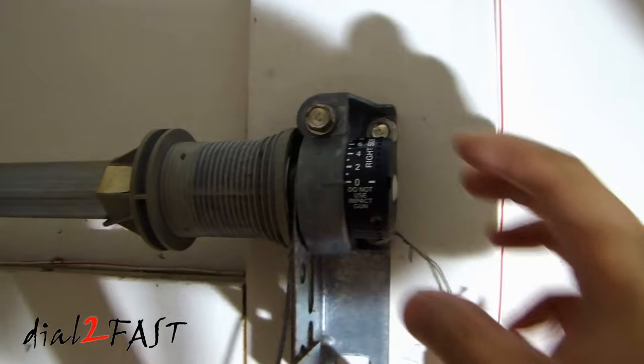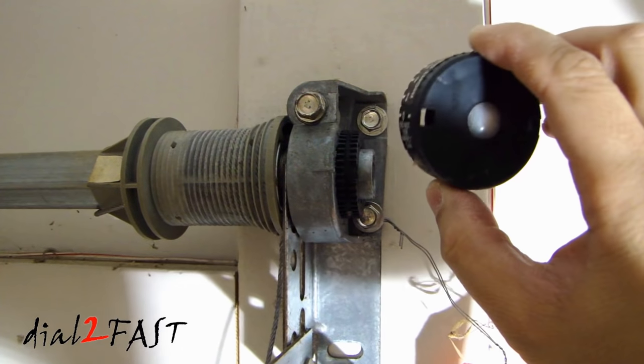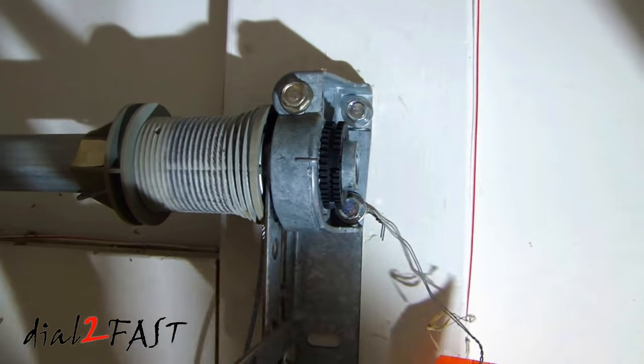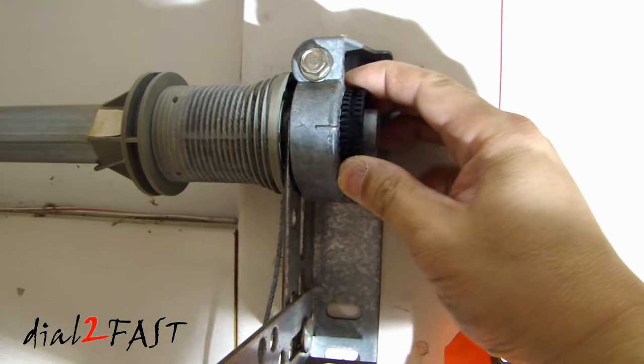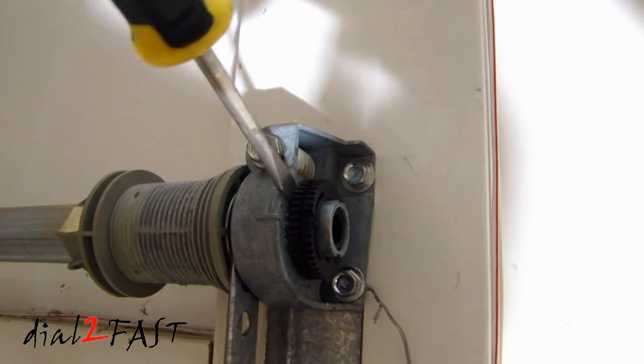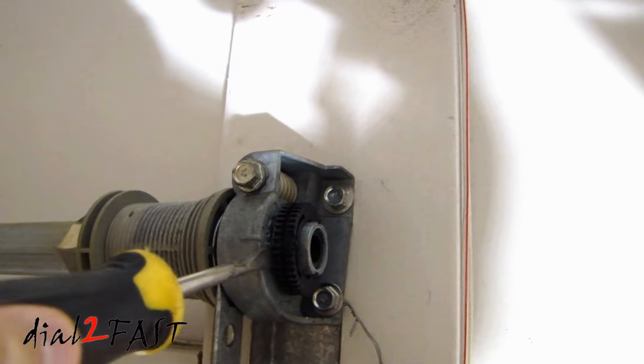Now you want to remove this counter assembly right here and also remove this gear right here. You might slowly work your way around and you'll see this come loose.